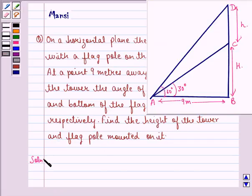So let us start with the solution to this question. Let the height of the flag be h meters and the height of the tower (BC) be capital H meters. We see that in triangle ABC...